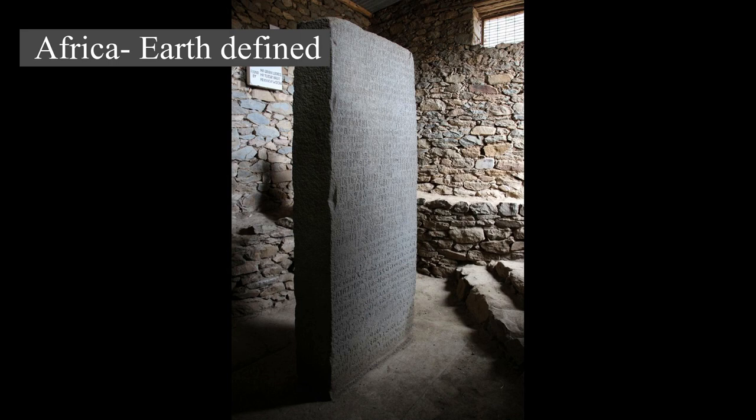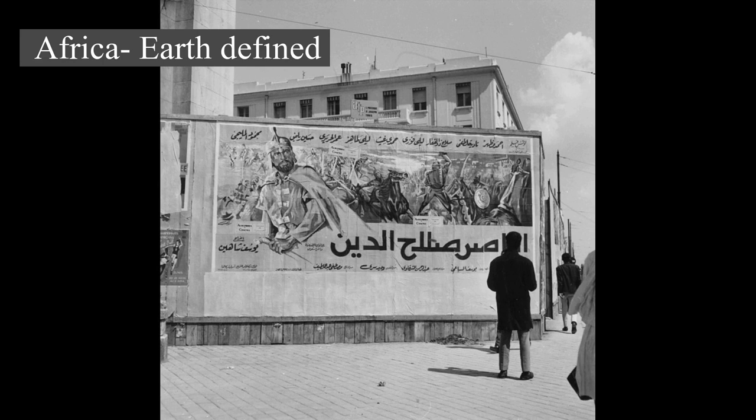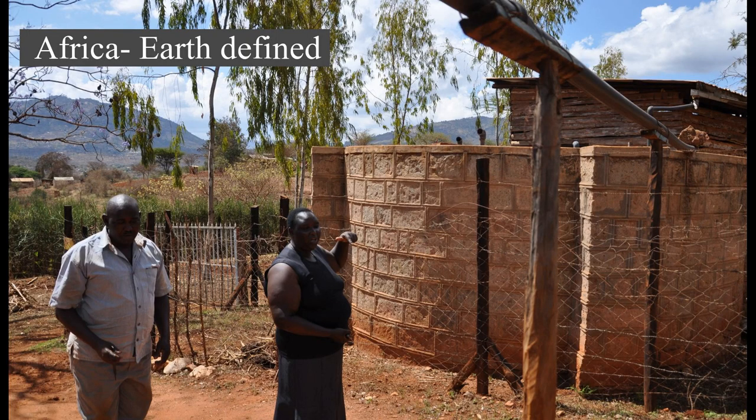The continent is surrounded by the Mediterranean Sea to the north, the Isthmus of Suez and the Red Sea to the northeast, the Indian Ocean to the southeast, and the Atlantic Ocean to the west. The continent includes Madagascar and various archipelagos. It contains 54 fully recognized sovereign states, eight territories, and two de facto independent states with limited or no recognition.